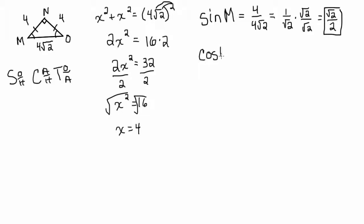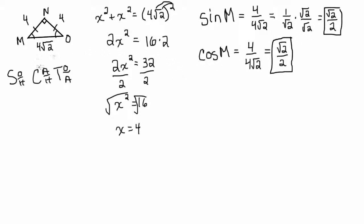The cosine of angle M is adjacent over hypotenuse. The adjacent side is 4, and the hypotenuse is 4 root 2. You'll notice it's the same as the sine — that happens with a 45-45-90 triangle — so it simplifies to root 2 over 2. And the tangent of angle M is opposite over adjacent: 4 over 4, which equals 1.